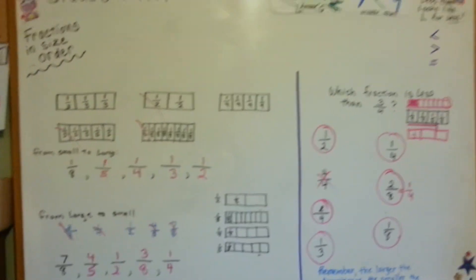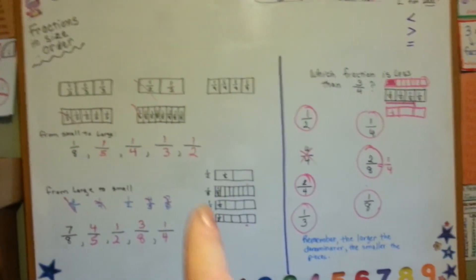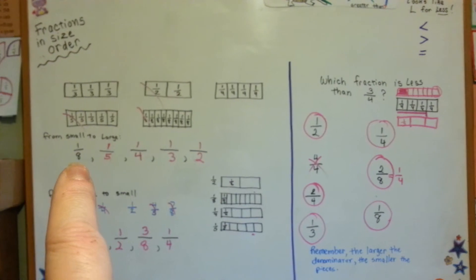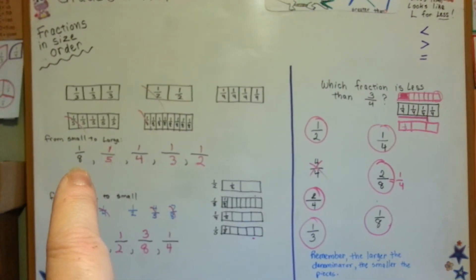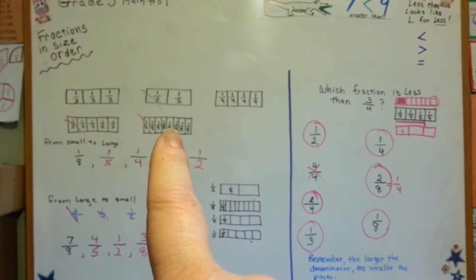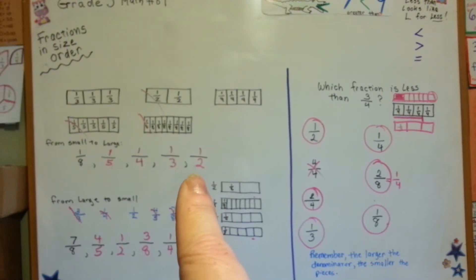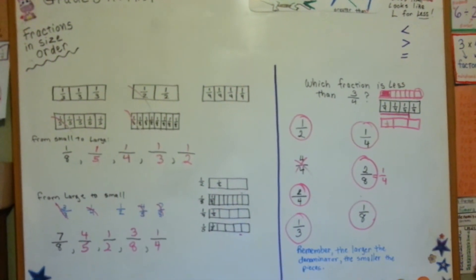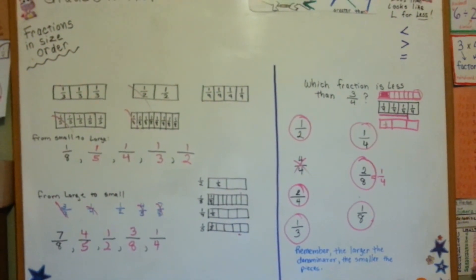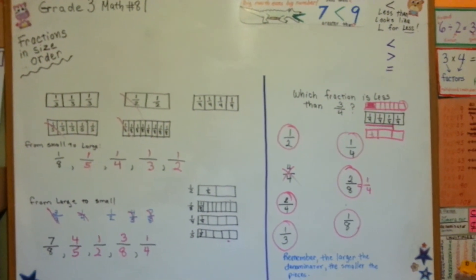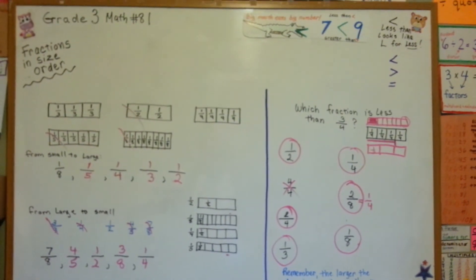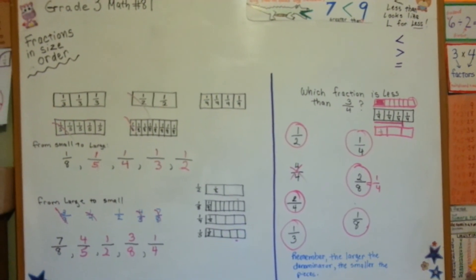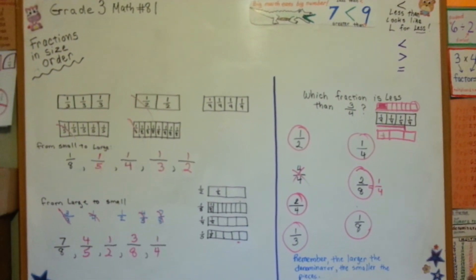That's putting fractions in size order. You need to remember that when the denominator is big, the pieces are little. When the denominator is small, like a two, the pieces are bigger. Keep that in mind, and I'll see you next video. If my videos are helpful and you like them, please share them with your friends. See you next time.